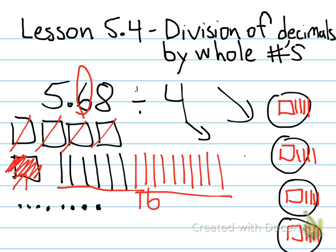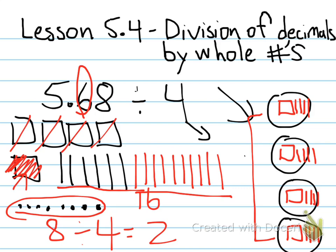Which takes us to our 8 hundredths. And since we have 8 hundredths and we have 4 groups, we know if we have 8 hundredths and we're dividing them into 4 groups, we can put 2 hundredths in each group. Therefore, the answer would be 1 whole, 4 tenths, and 2 hundredths, that would be in each group, which would be 1 and 42 hundredths.